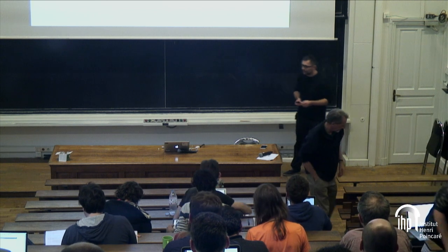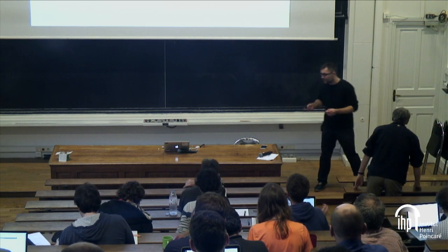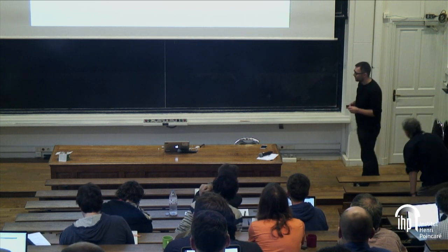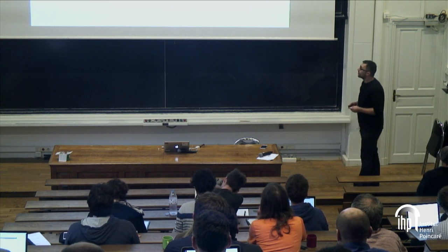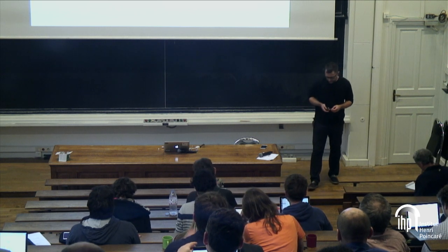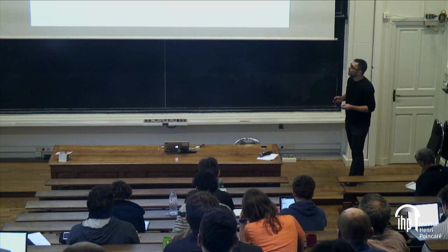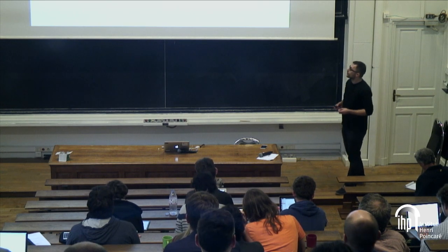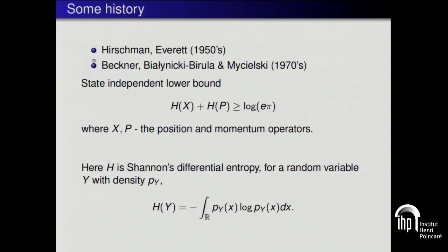First of all, let me thank the organizers for the invitation. I used to be a pre-doc intern here, so it's always very nice to come back. In my talk I will speak about entropy and metric uncertainty relations. Let's start with some historical background. It all started with Heisenberg, but let's start from the 1950s where Hirschman and Everett were the first to propose using Shannon's differential entropy to quantify uncertainty.